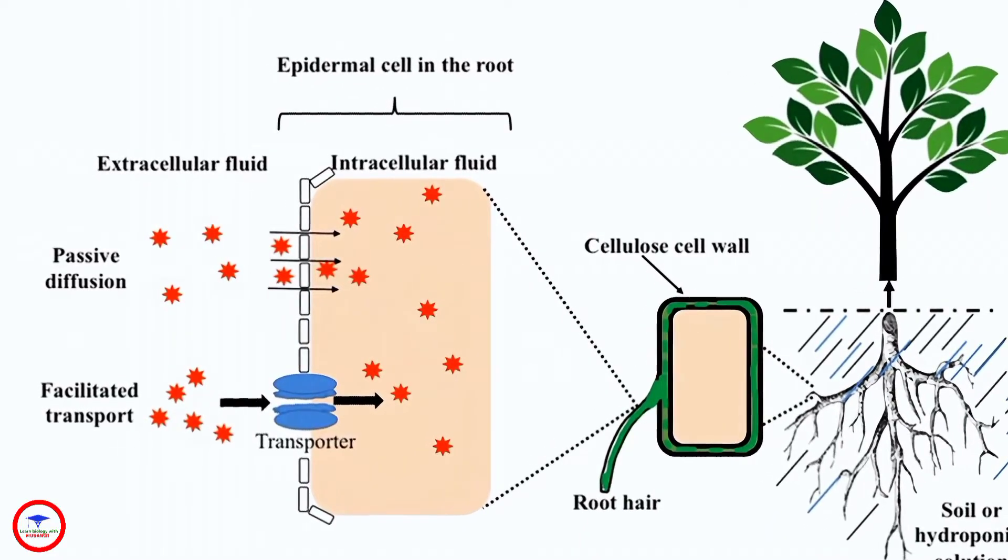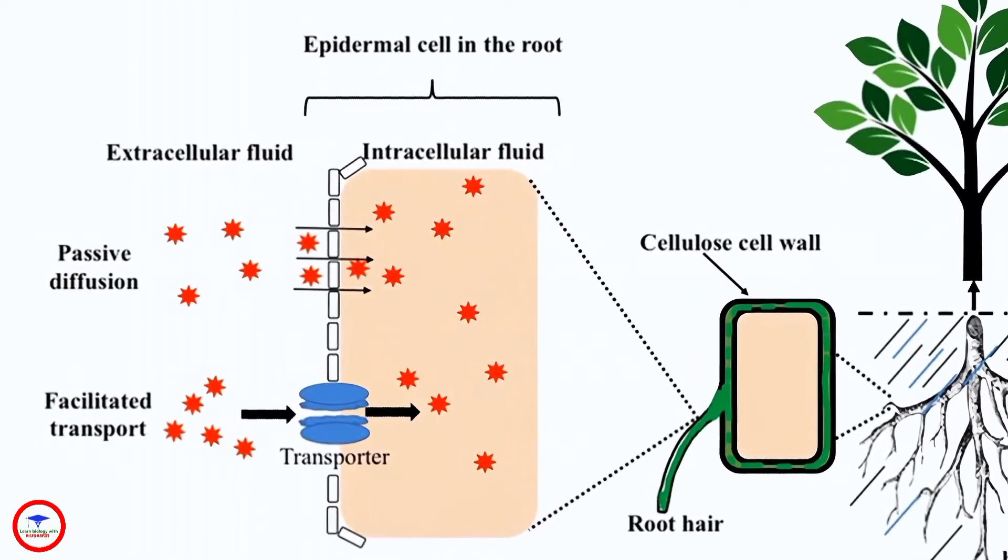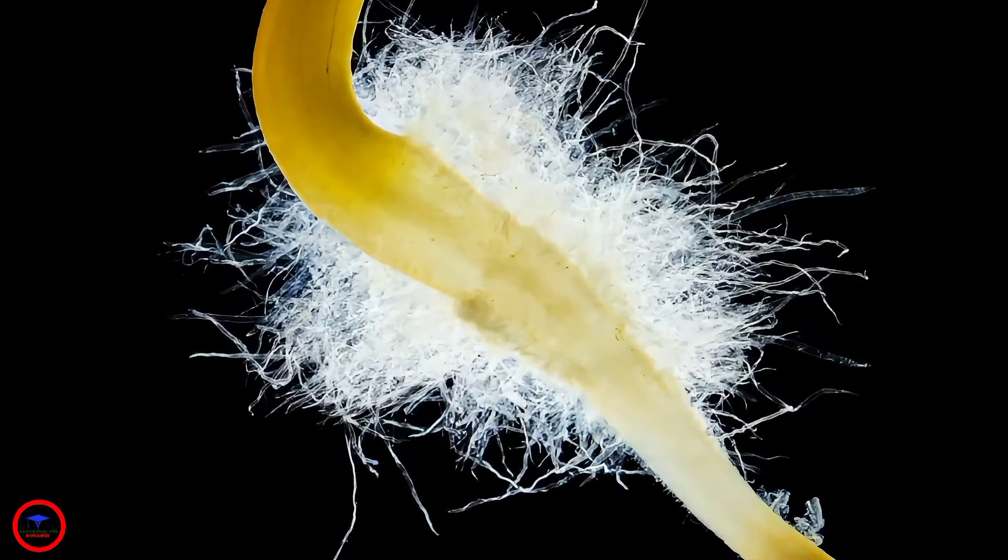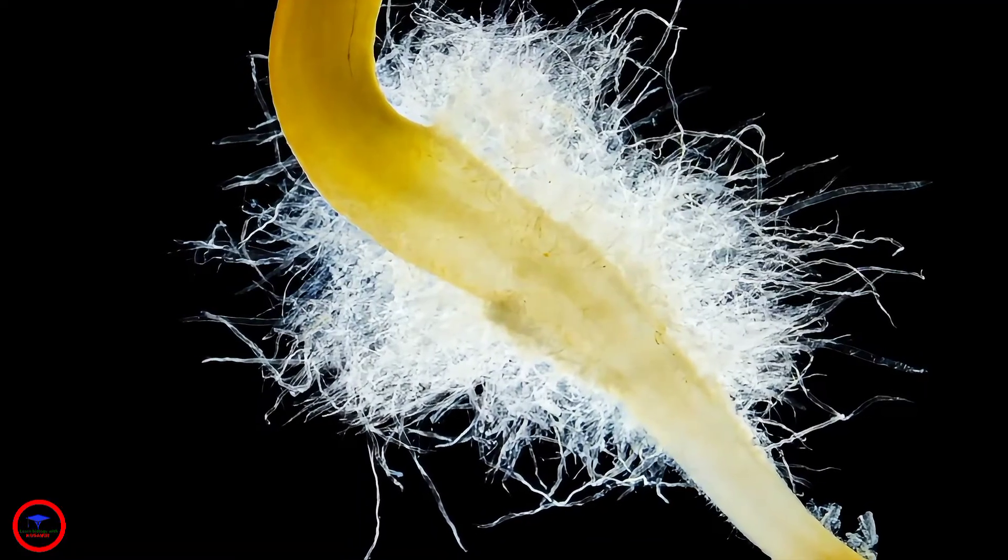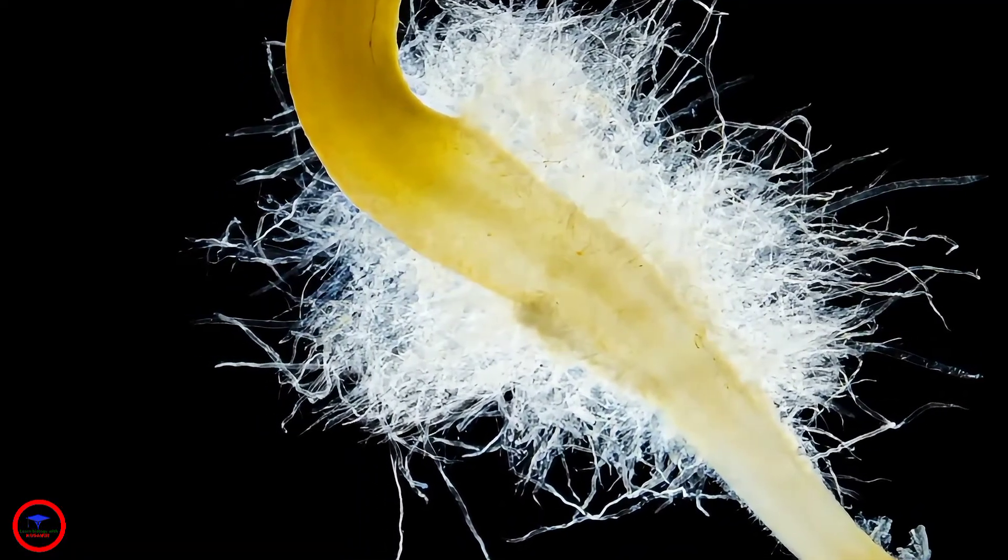Root hairs, for instance, are specialized for absorption of water and mineral salts. They have a large surface area and thin walls, which makes them perfect for this job.